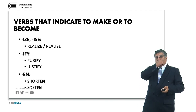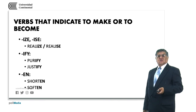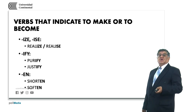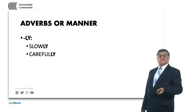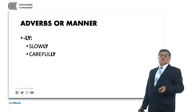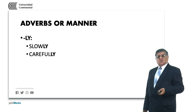To make or become: realize — with a Z is American English, with an S is British English. Purify means the action of giving purity. Justify means the action of giving justice or providing the reasons that were followed to do something. Shorten means to make something short. Soften means to make something soft. Manner adverbs use -ly: slowly, carefully, readily. In Spanish, the ending -ly is translated as -mente — slowly becomes lentamente, carefully becomes cuidadosamente.